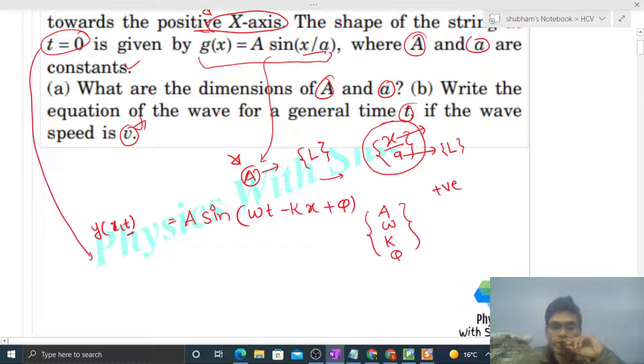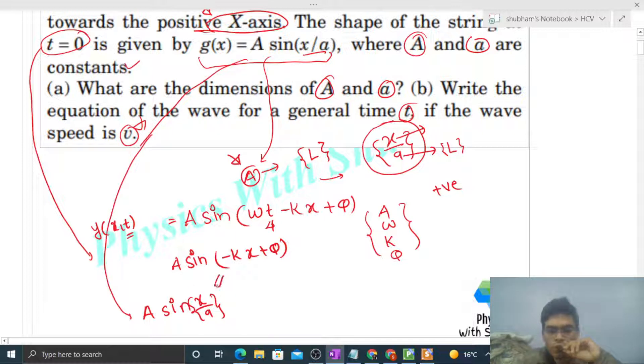So inka value aap kaise find out karoge? Aapko equation de rakha hai t equals zero pay. So t ka value zero put kar do. So jo equation bache gi: A sin(minus kx plus phi). Ye jo equation hai aapko de rakha hai, that is A sin(x upon a). So yaha se hum compare karenge, ye jo g(x) hai t equals zero pay.